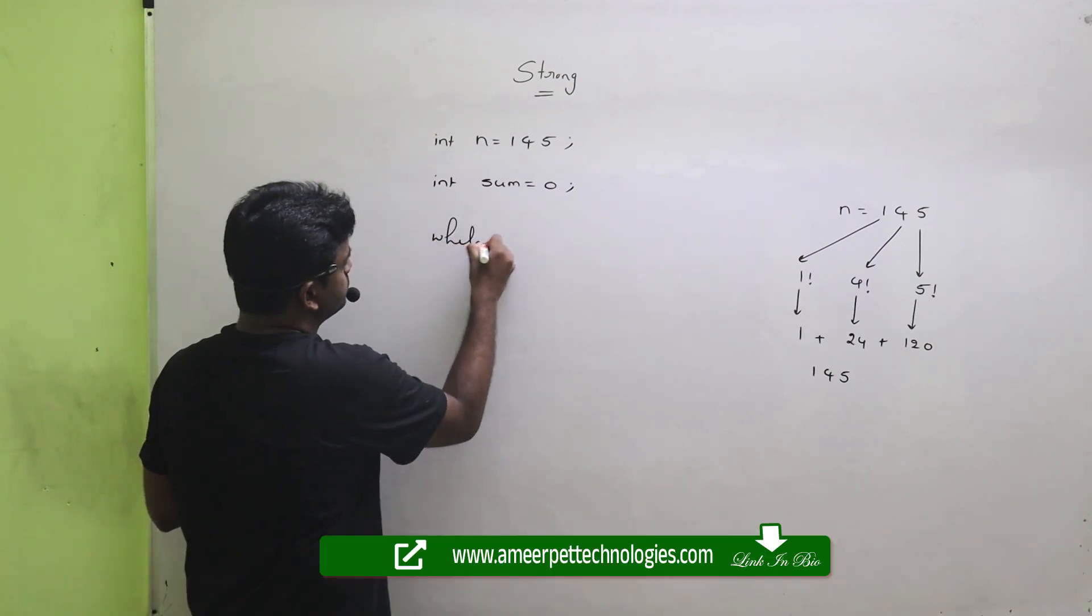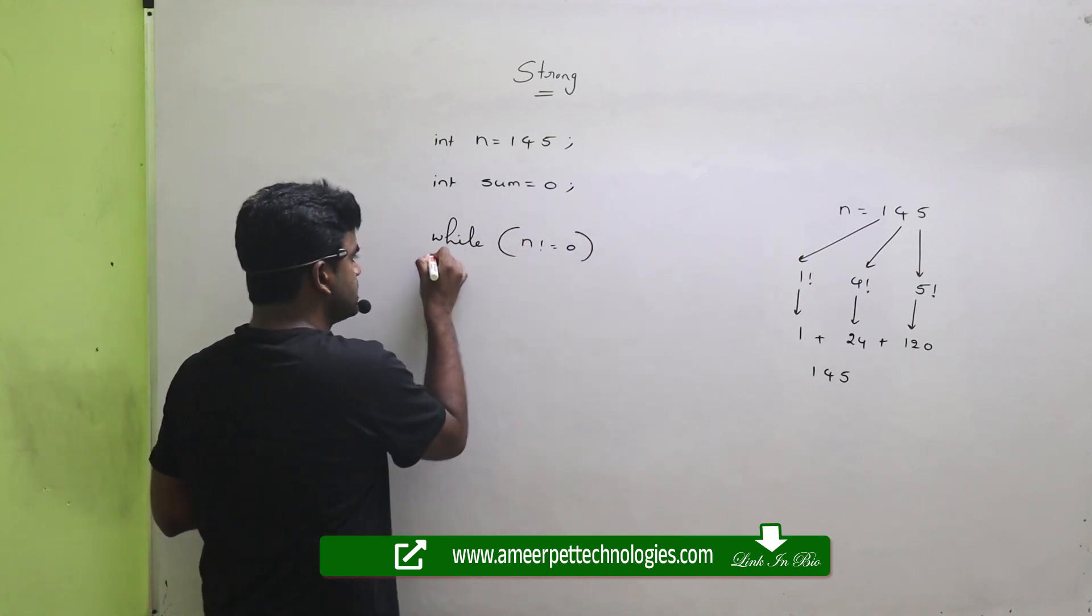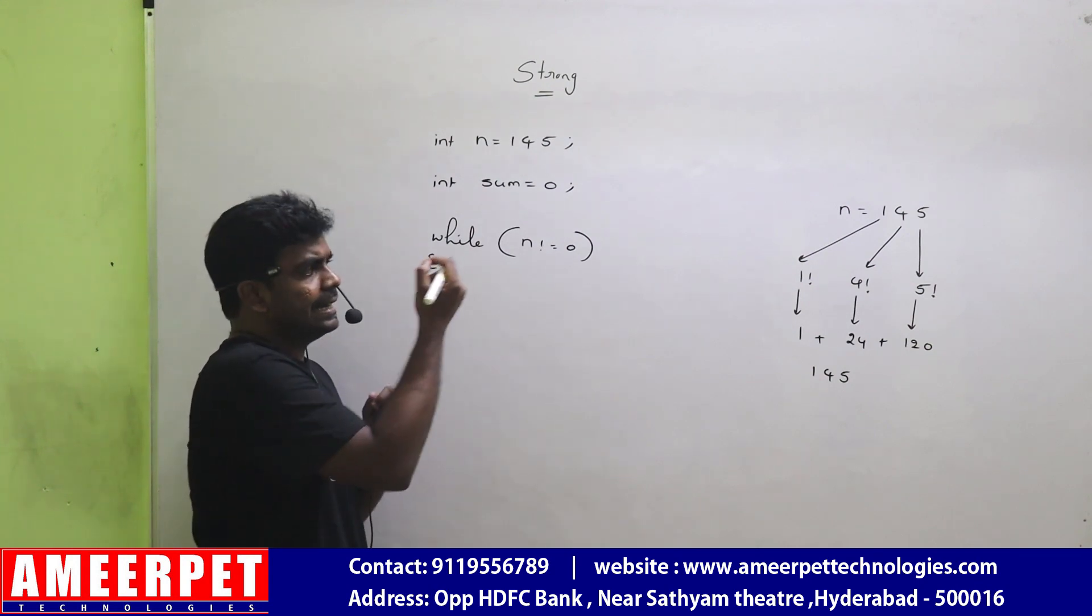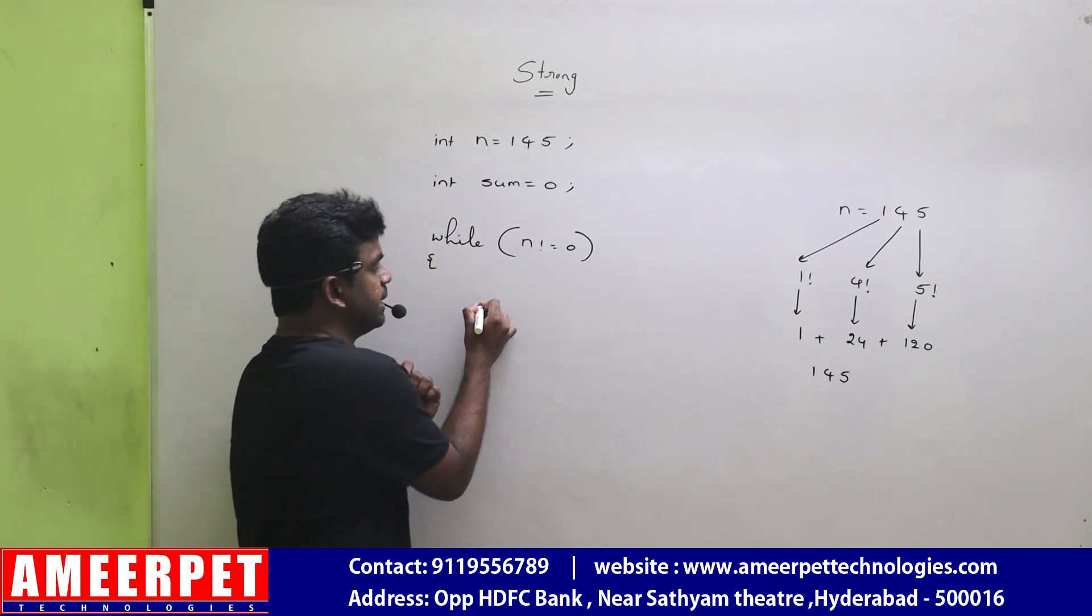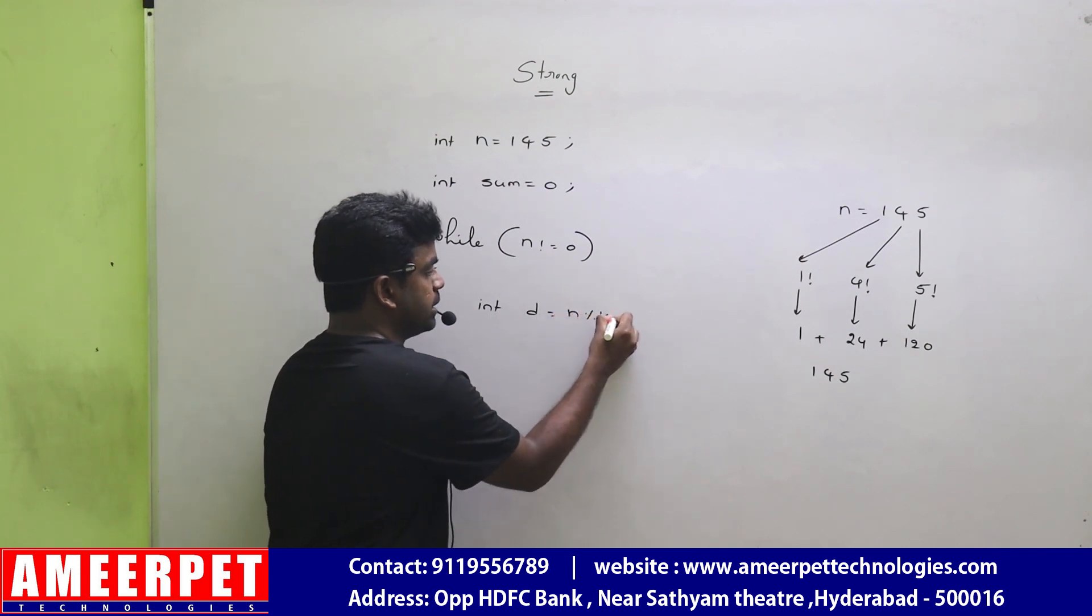While n not equal to 0. Yes, until the value becomes 0, getting each digit. How to get each digit? int d equals to n mod 10.